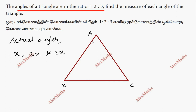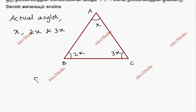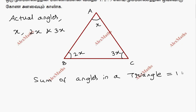The angles are x, 2x, and 3x. Now, the sum of the angles in a triangle is equal to 180 degrees. So the equation is x plus 2x plus 3x equals 180.